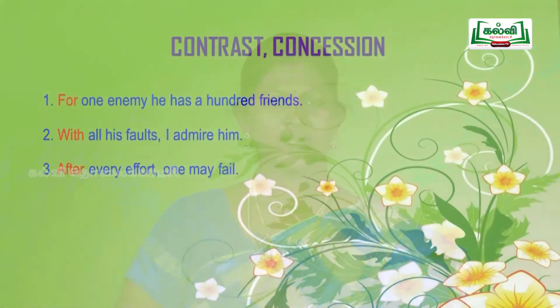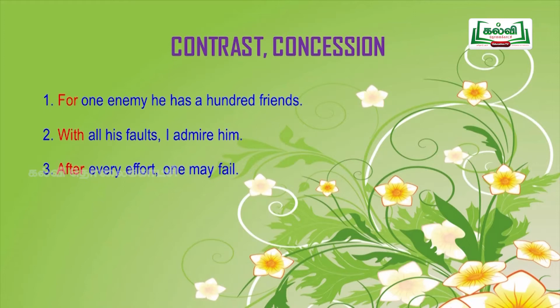Then come examples for contrast and concession. First: 'for one enemy, he has a hundred friends' — for. Second: 'with all his faults, I admire him' — with. Third: 'after every effort, one may fail' — after. One word can occur in different places; you must understand which preposition fits each context without changing the meaning.